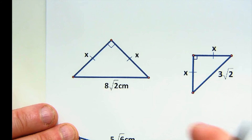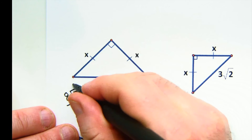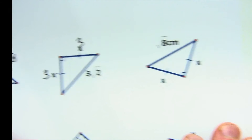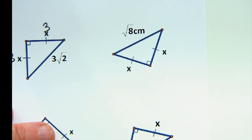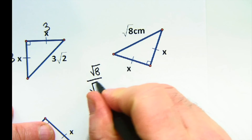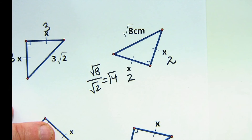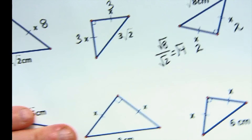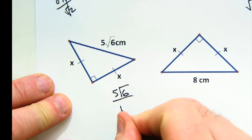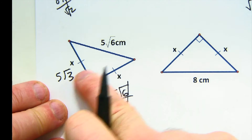Working backwards, we divide by √2. So 8√2 divided by √2 gives 8. Dividing by √2 gives 3 in those locations. If the hypotenuse is √8, dividing by √2 gives √4 which equals 2, so the legs are 2 each. If the hypotenuse is 5√6, dividing by √2 gives 5√3 for the legs. If given a leg of 8, dividing by √2 means multiplying top and bottom by √2: 8√2 over 2, which is 4√2. Similarly, 6 divided by √2 gives 6√2 over 2, which is 3√2.